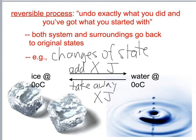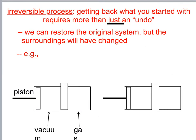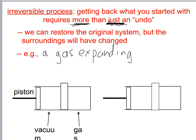Now we have irreversible processes. Getting back to what you started with requires more than just an undo. We can restore the original system, but the surroundings will have changed — for example, a gas expanding into an evacuated space.